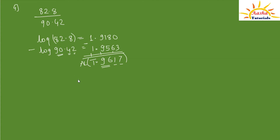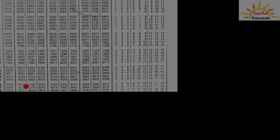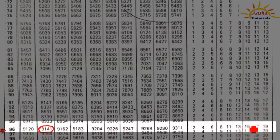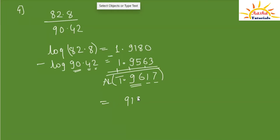Antilog of 0.96 in the 1st column is 9141, and mean difference from the 7th column is 15. Adding 15 gives 9156. For the decimal point: the characteristic is bar 1 (i.e., −1); adding 1 gives −1 + 1 = 0, so we write the decimal point as 0.9156. The final answer for 82.8 ÷ 90.42 is 0.9156.